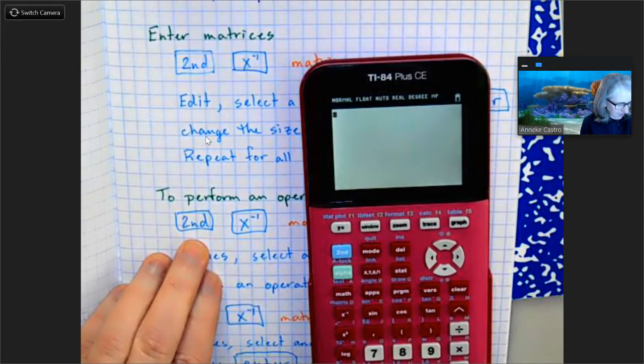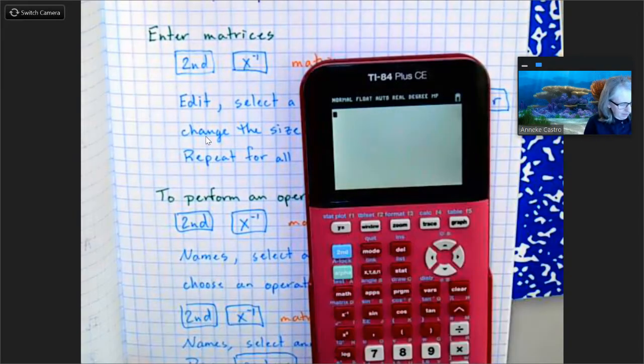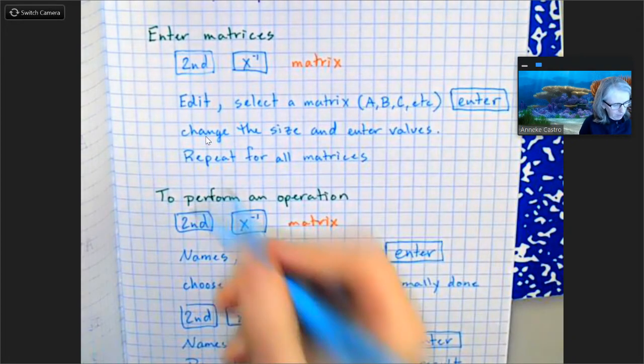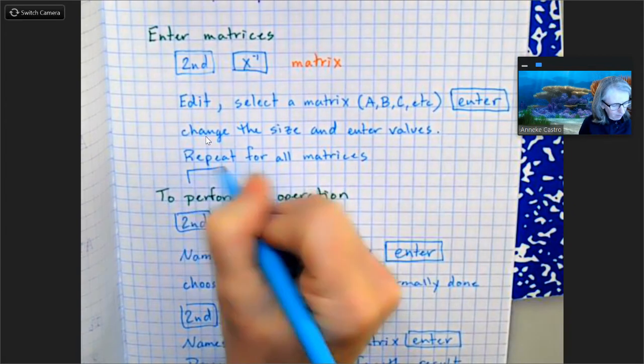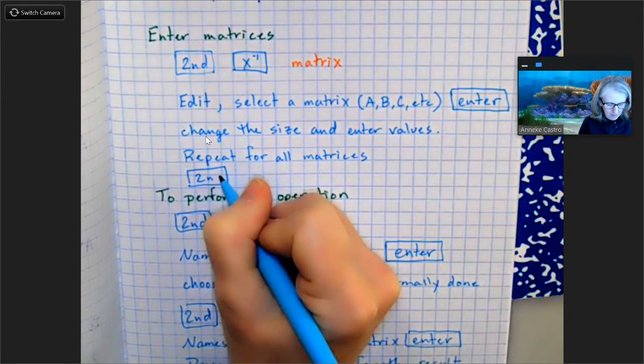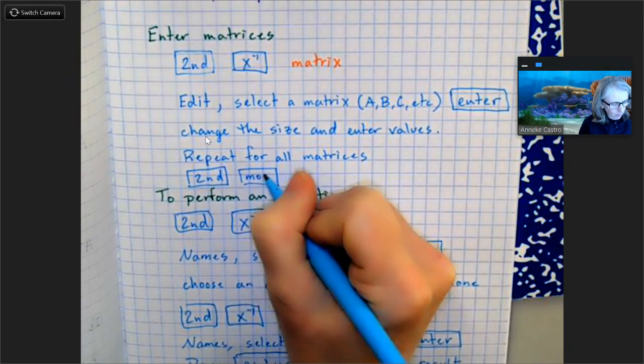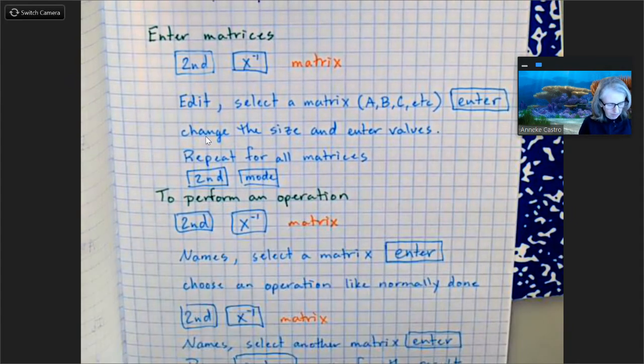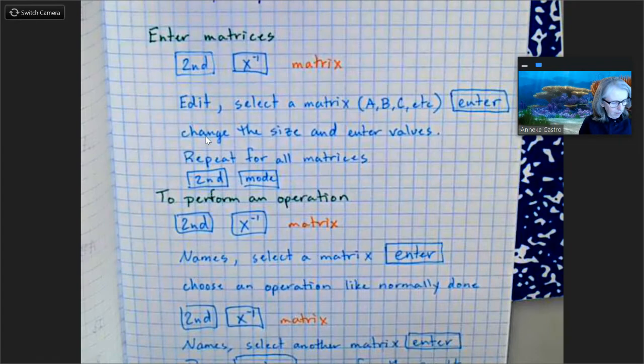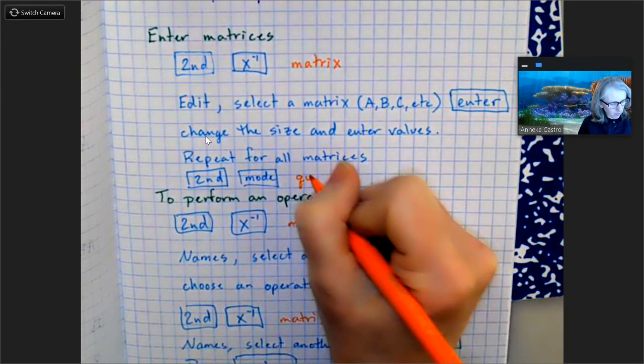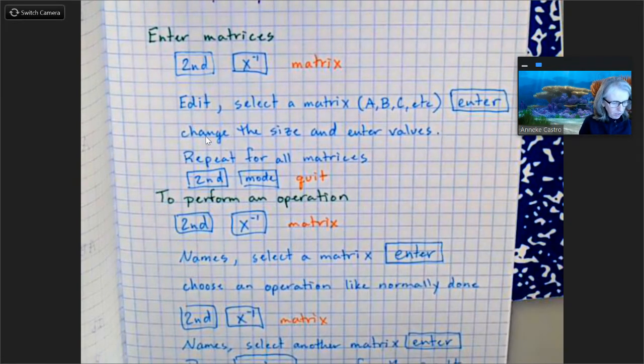Okay, let's back up. So after I enter in my matrices, you need to quit. You need to get out of there. So let me see, so then second quit. Repeat for all matrices. Let's add that on here. Second mode in order to quit. So we can get back out to the main screen. So that'll quit out of there. Sorry, didn't notice I needed to do that.